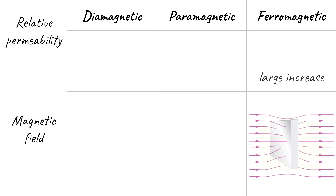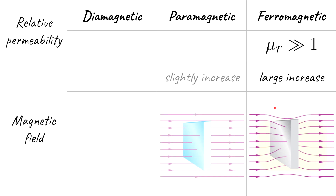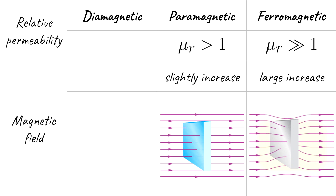Ferromagnetic materials form very strong internal induced magnetic fields in the direction of the applied magnetic field, and their relative permeability is much bigger than one. When a ferromagnetic material is placed inside a magnetic field, the magnetic field lines bend toward it. Paramagnetic materials form internal induced magnetic fields in the direction of the applied field; relative permeability is a bit more than one, and the magnetic field lines prefer to pass through this material rather than through a vacuum.